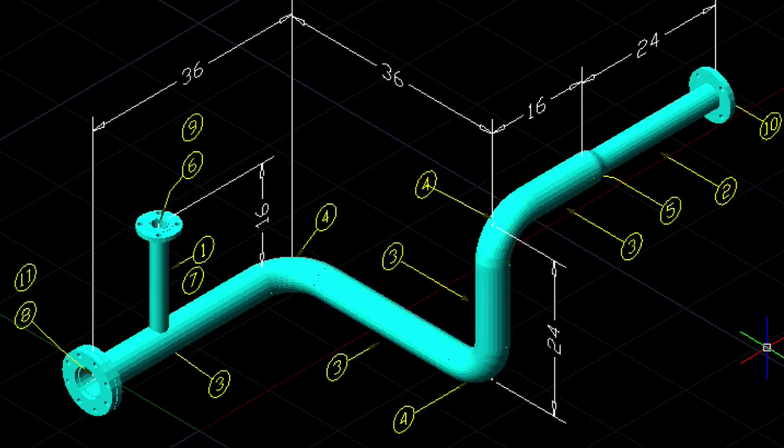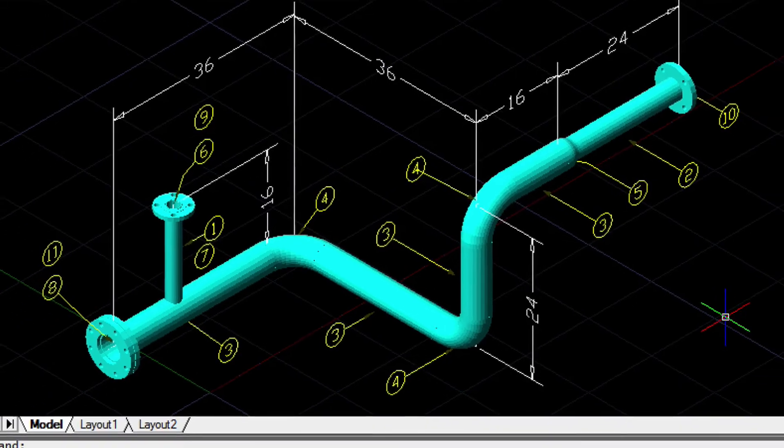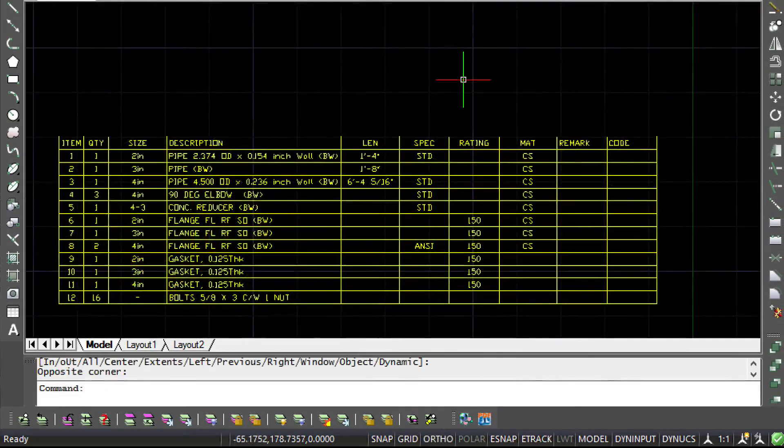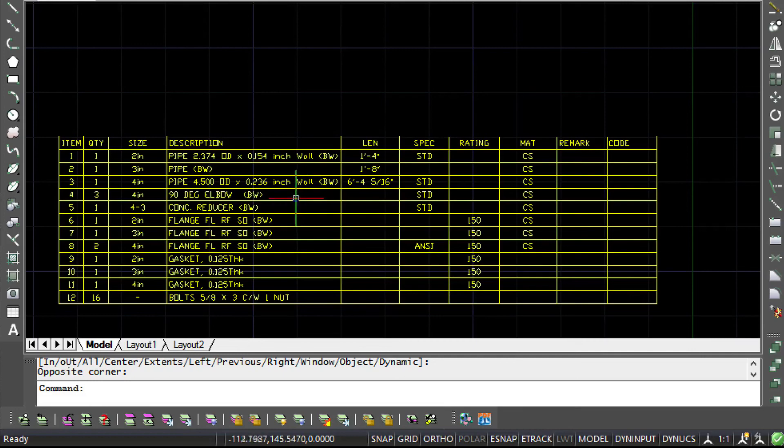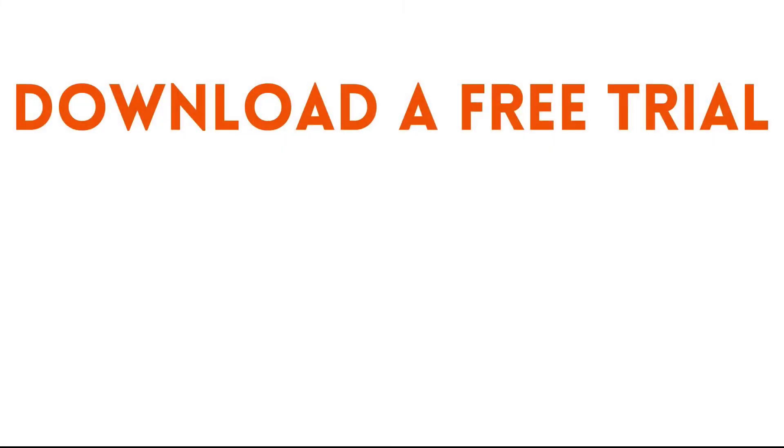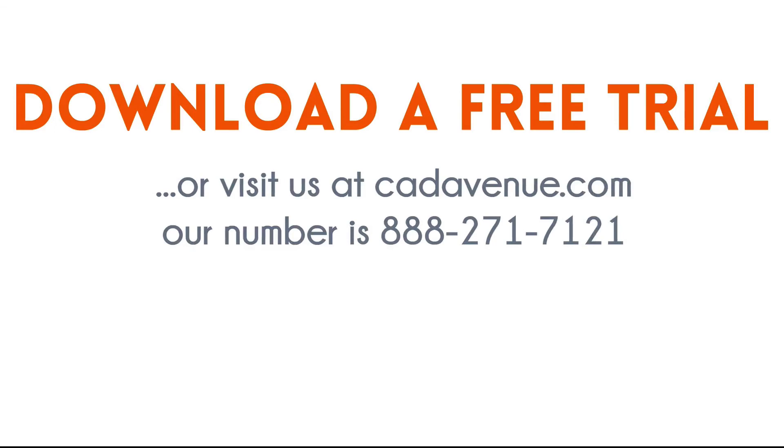So, take some time out today and try out MEC-Q. With just a little bit of practice, you too can easily draw a piping spool. To find out more about MEC-Q, visit us at cadavenue.com. A 30-day trial is also available. Send us your questions or call us at 888-271-7121. You can also reach us by email at info at cadavenue.com. YouTubers, please leave your comments or if you are running short on time, please give us a thumbs up.